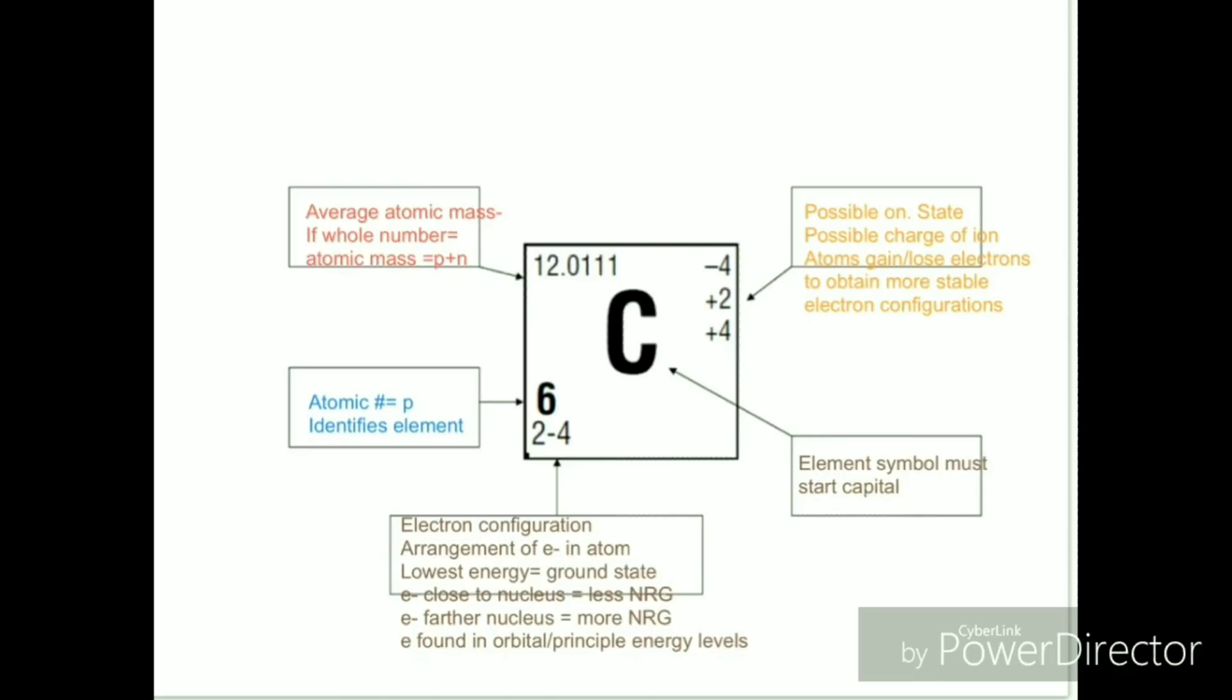Now, many a times, atoms try to obtain more stable electron configurations by becoming ions. Ions result when atoms gain or lose electrons. Here are listed the possible charges of various ions. The charge of an ion is also called its oxidation state. When an ion has a negative charge, it gains negative electrons. When an ion has a positive charge, it loses negative electrons. The protons and neutrons in the nucleus do not change when atoms form ions.